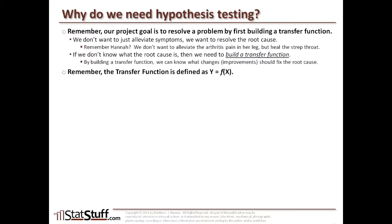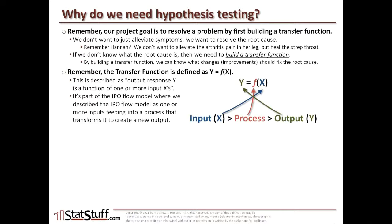The transfer function is defined as y equals f of x — the output response y is a function of one or more input x's. It's part of the IPO flow model, where we have an input that leads to a process and an output. The y refers to that output, the process piece refers to the function applied to x, and x represents the inputs. So it's really expressing the IPO flow model as an equation.